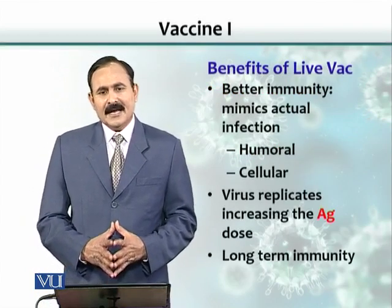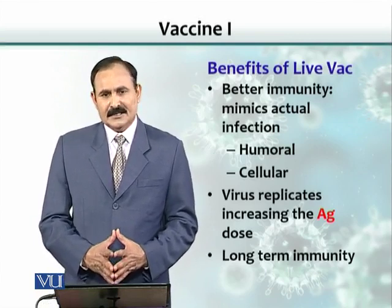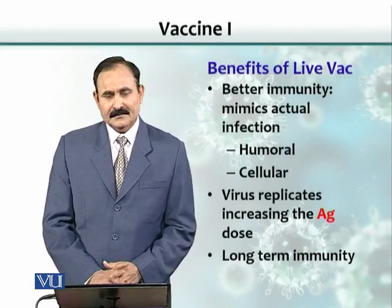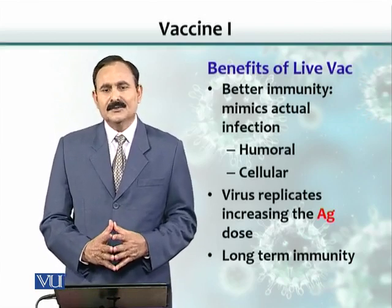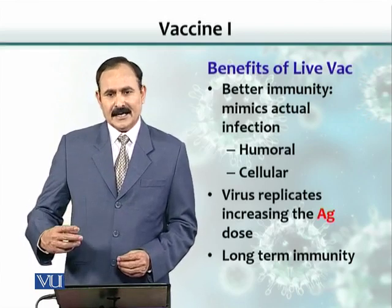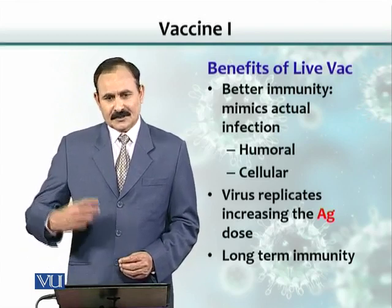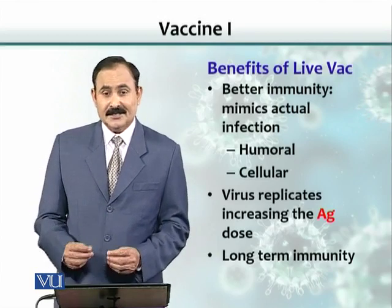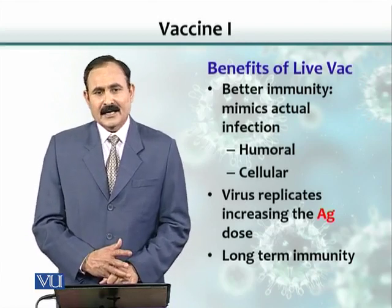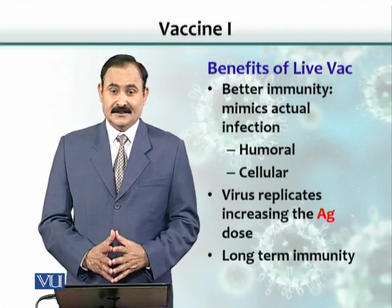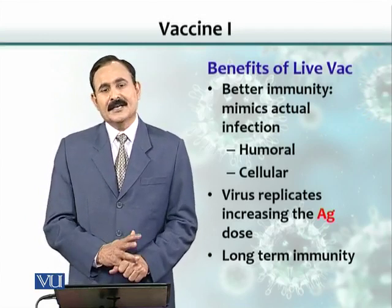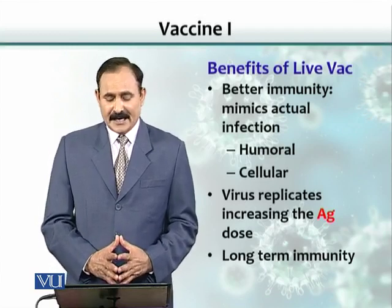There are advantages and disadvantages of live vaccines compared with killed vaccines. Because the organism is alive, you need to give only a small amount, since the organisms can replicate in the body and increase the antigen dose. Once the immune system is stimulated by the increased antigen dose over a longer time, the quality of immunity is better — it gives better antibodies. Live attenuated vaccines provide heightened immune response, both humoral as well as cellular.